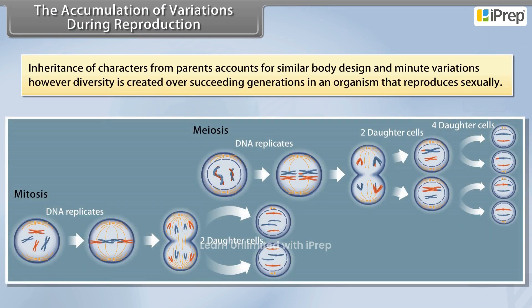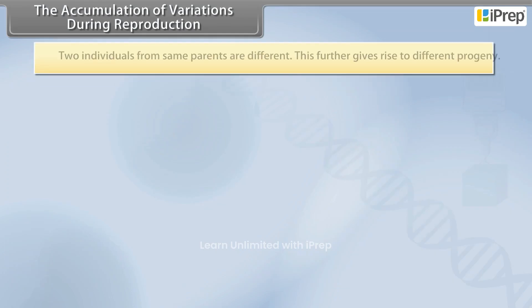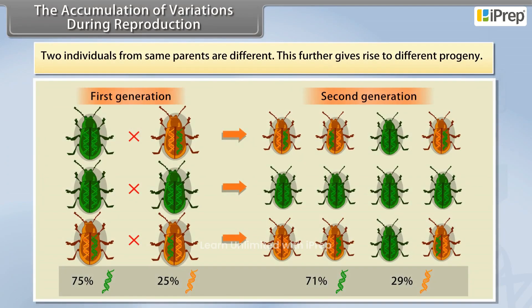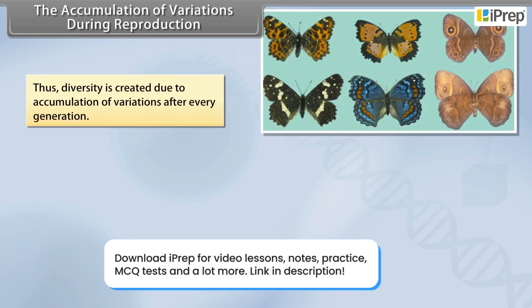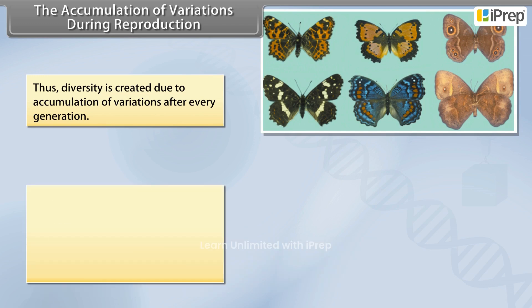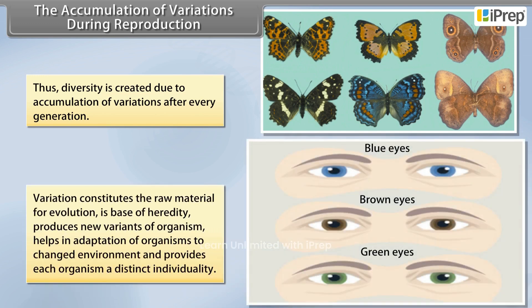Inheritance of characters from parents accounts for similar body design and minute variations; however, diversity is created over succeeding generations. In an organism that reproduces sexually, two individuals from the same parents are different, and this further gives rise to different progeny.